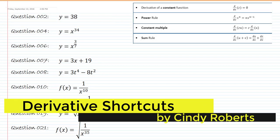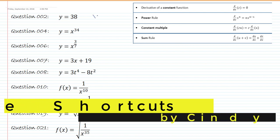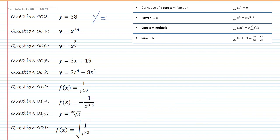Okay, so finding the shortcuts of these derivatives. I can see the very first one is the derivative of a constant, so that's just a number, would be zero.